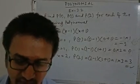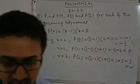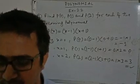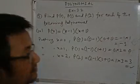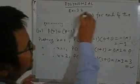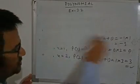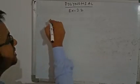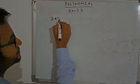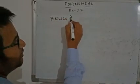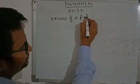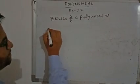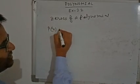Now question number 3: verify whether the following are zeros of a polynomial. Let me explain the concept of zeros of a polynomial with a simple example. Zeros of a polynomial — suppose P(X) is a polynomial and its value, suppose X plus 5.